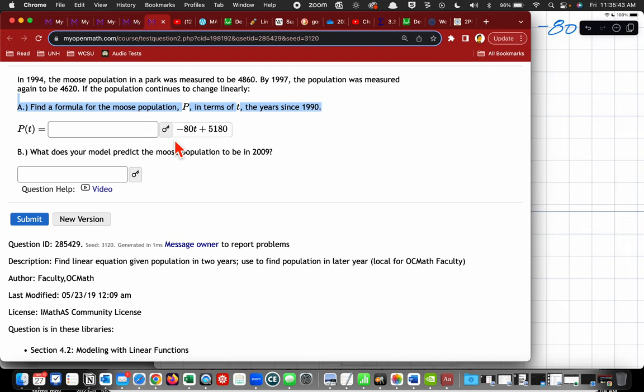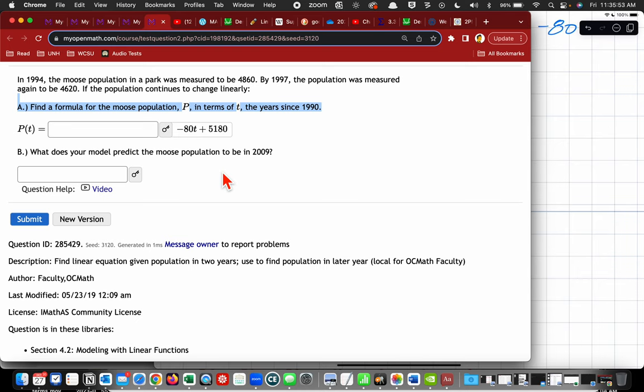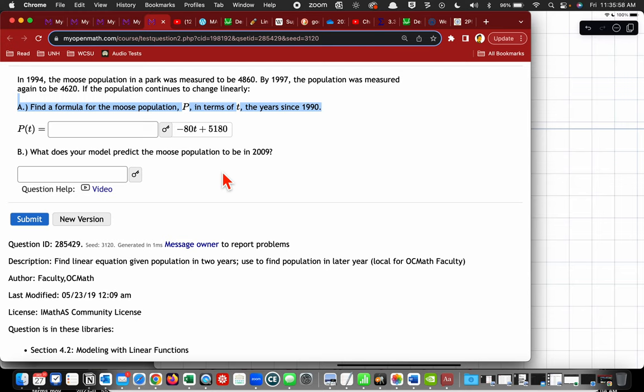So I get y equals negative 80t plus 5180, which is what I just found, and what's right there. What does your model predict the moose population will be in 2009? So what's 2009? How many years after 1990 is that? It's 19, so I want to say p of t is equal to negative 80 times 19 plus 5180.